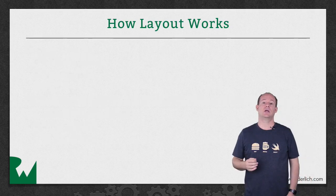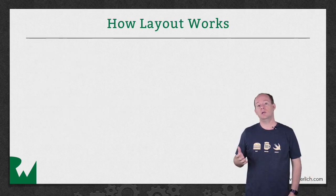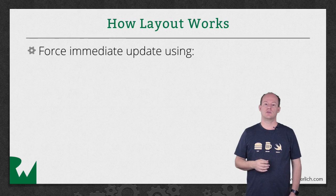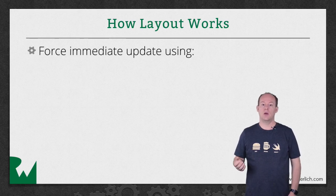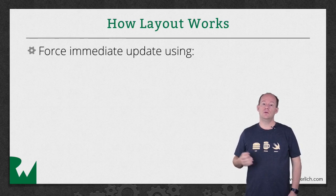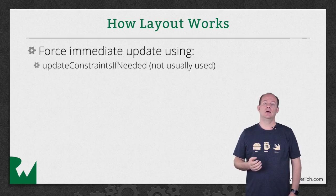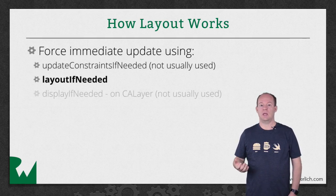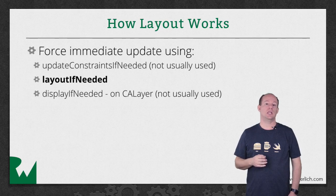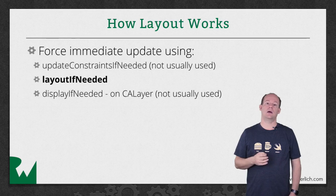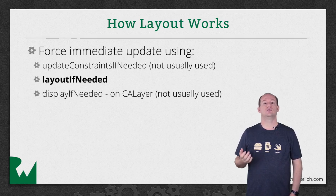Because this happens on the next render pass, if you want to immediately recalculate the constraints, layout, or display — rather than calling the methods directly — you use Update Constraints If Needed, Layout If Needed, or Display If Needed. Of these, you'll typically only use Layout If Needed. If you just changed a constraint and you want the layout to update to match the new constraint, you'll use Layout If Needed to cause that layout to happen.